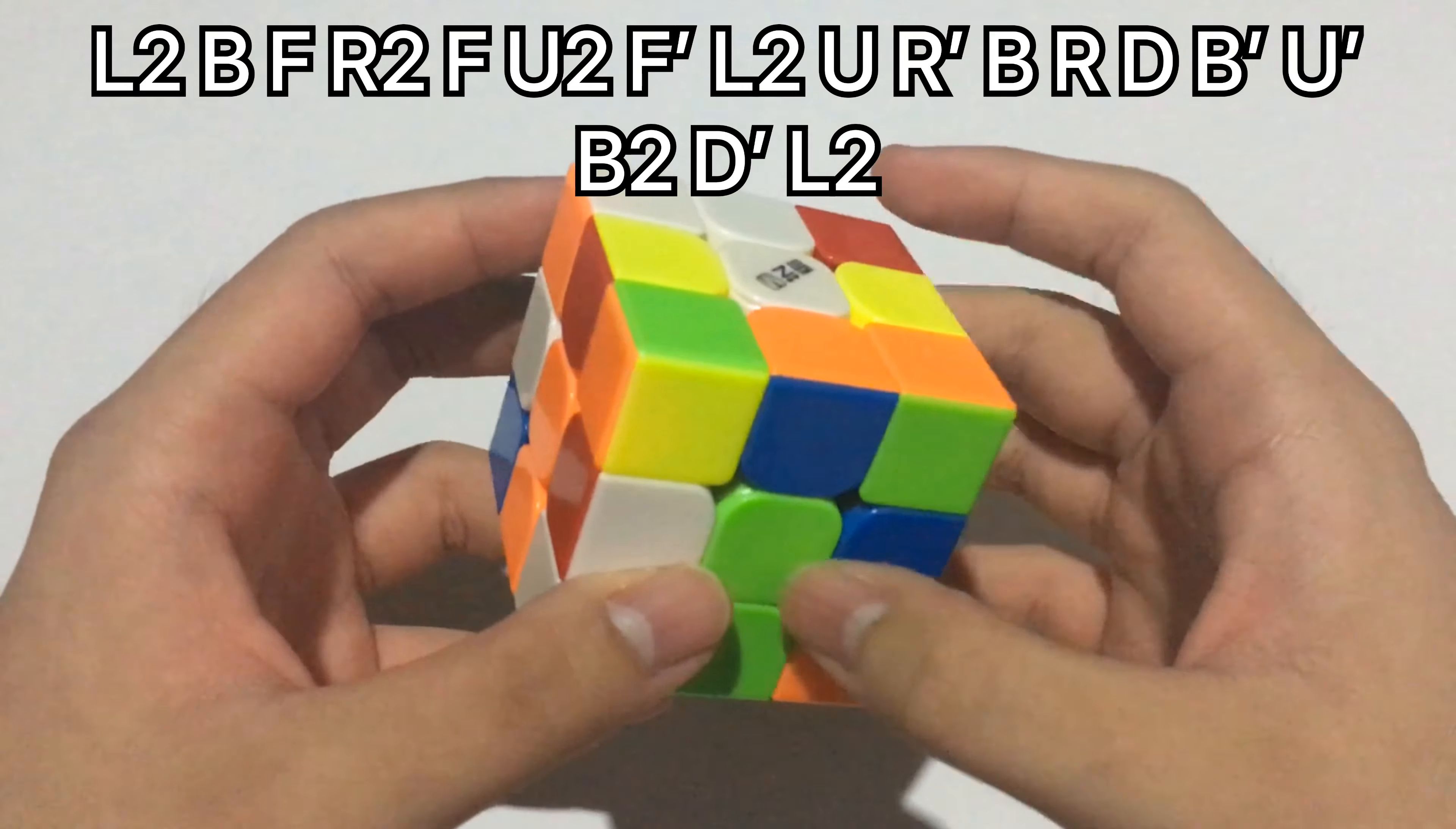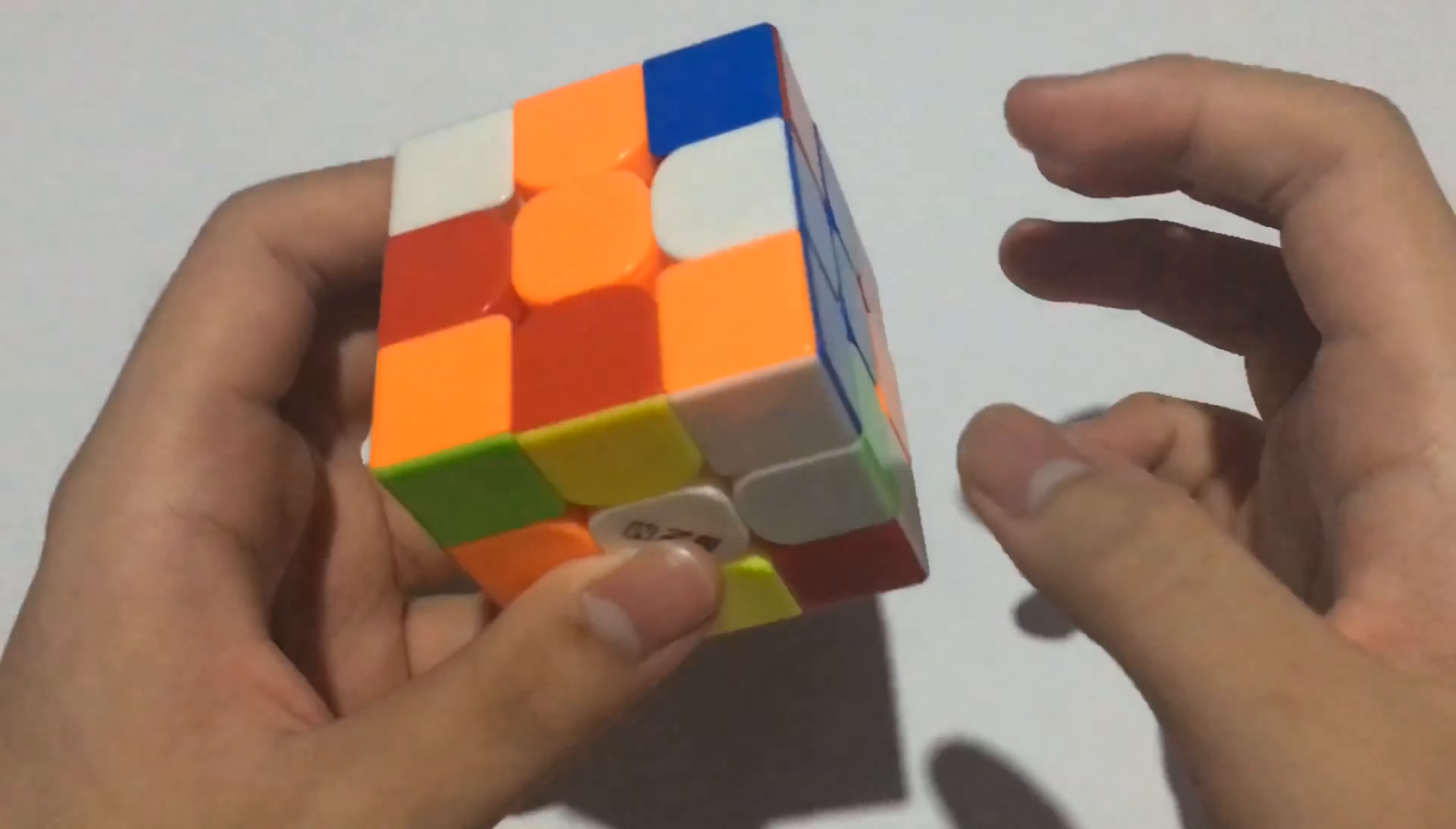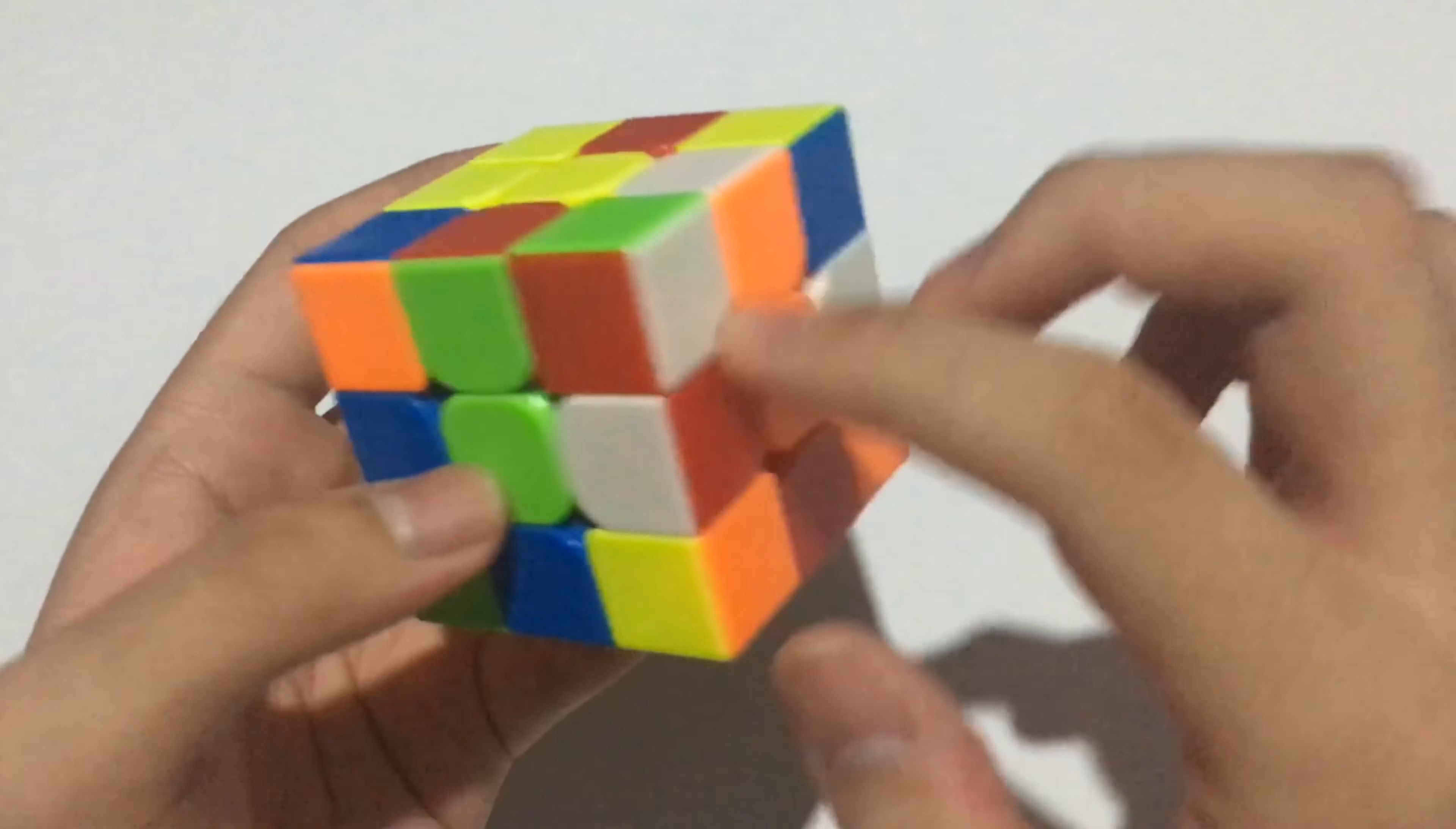Okay, so I did white cross, and my cross pieces were there, there, there, and there. This one is already solved, you just need to do a D2, then here are the other cross pieces.